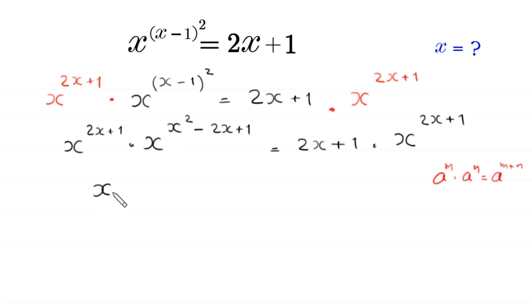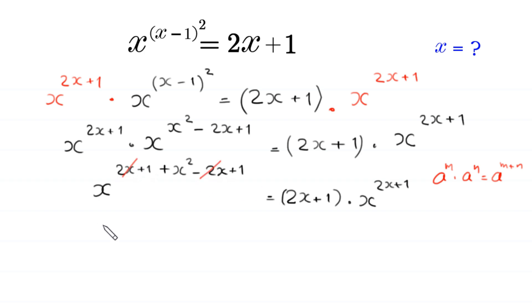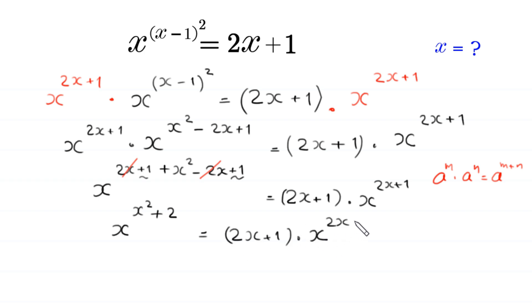This expression becomes x to the power 2x plus 1 plus x squared minus 2x plus 1, which equals 2x plus 1 times x to the power 2x plus 1. The negative 2x cancels with the positive 2x, and on the left side we are left with x to the power x squared plus 2, equal to 2x plus 1 times x to the power 2x plus 1.